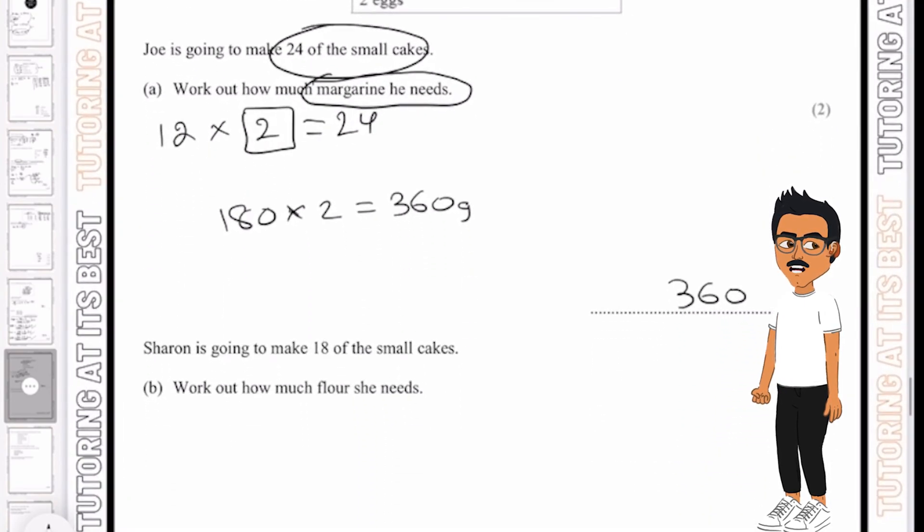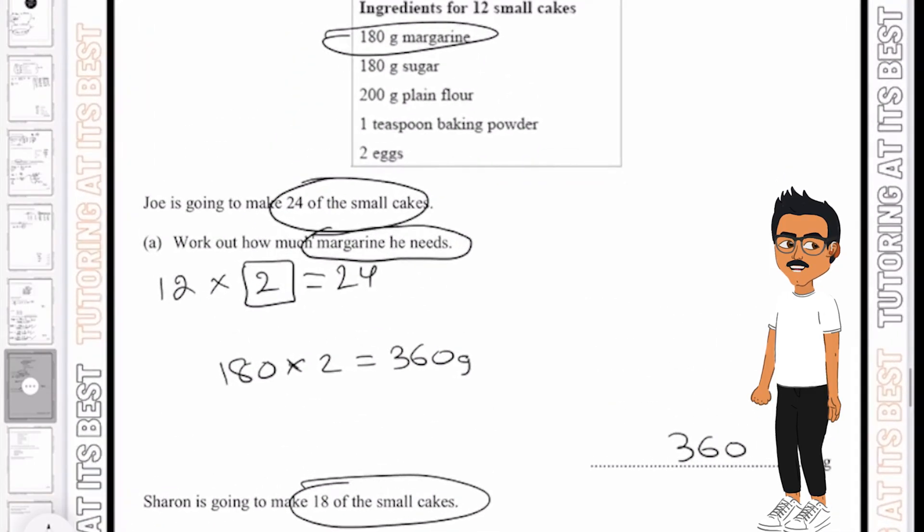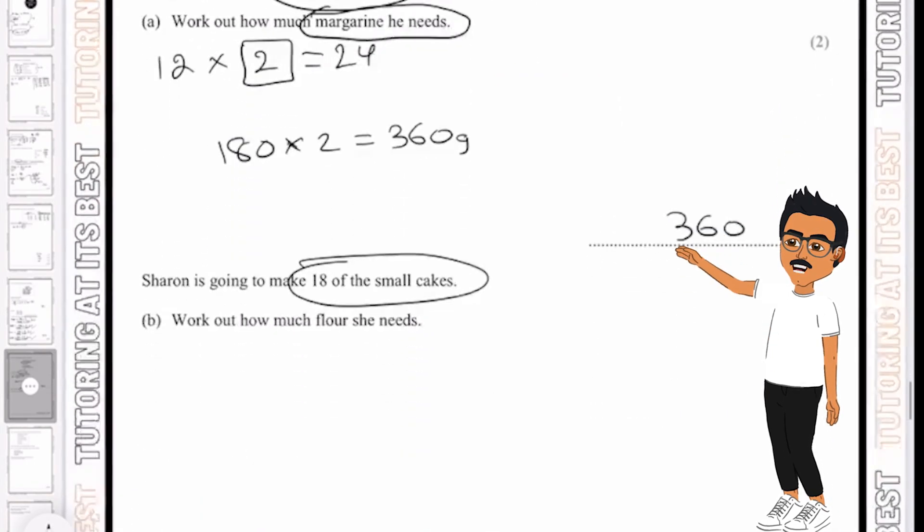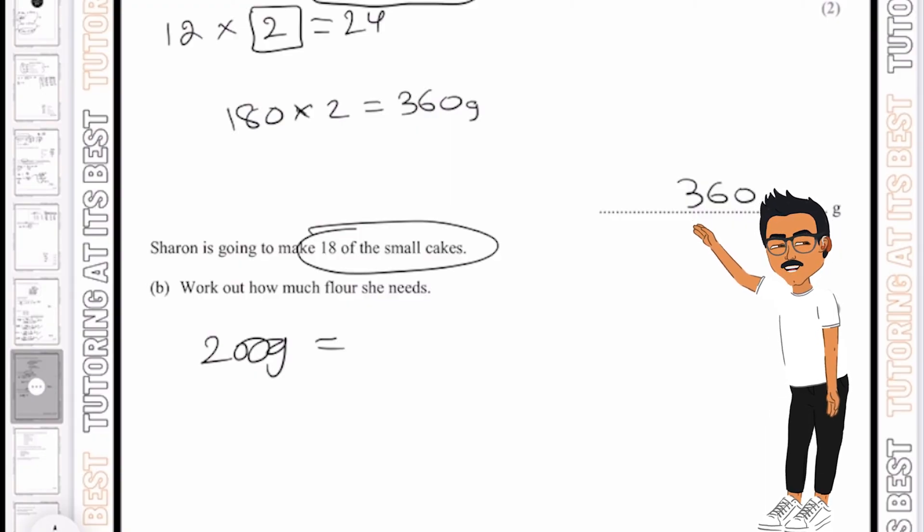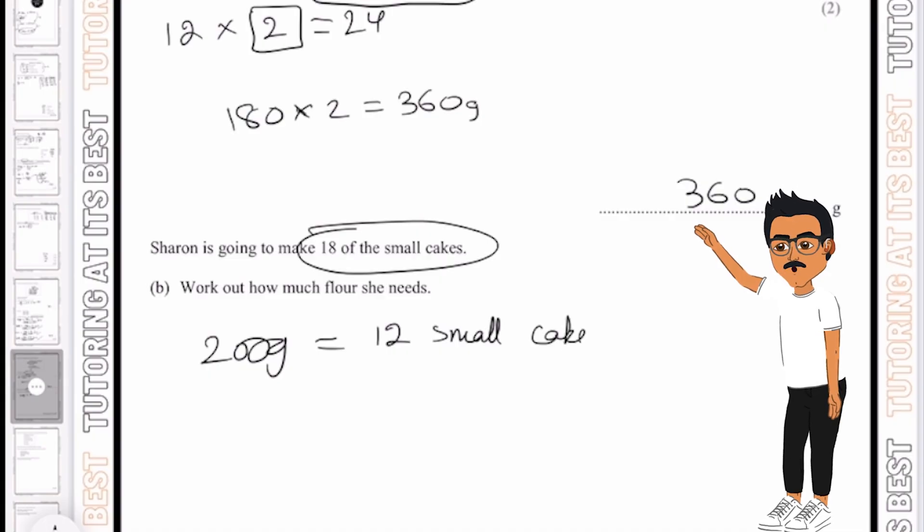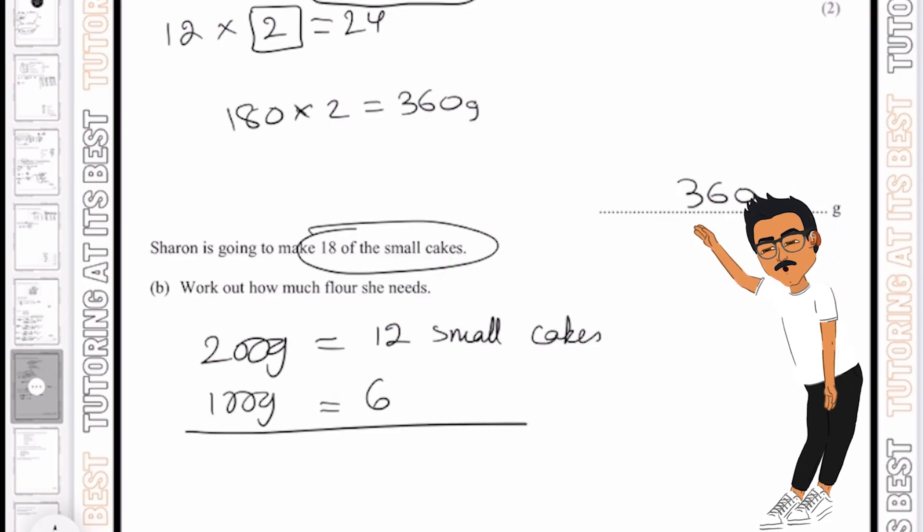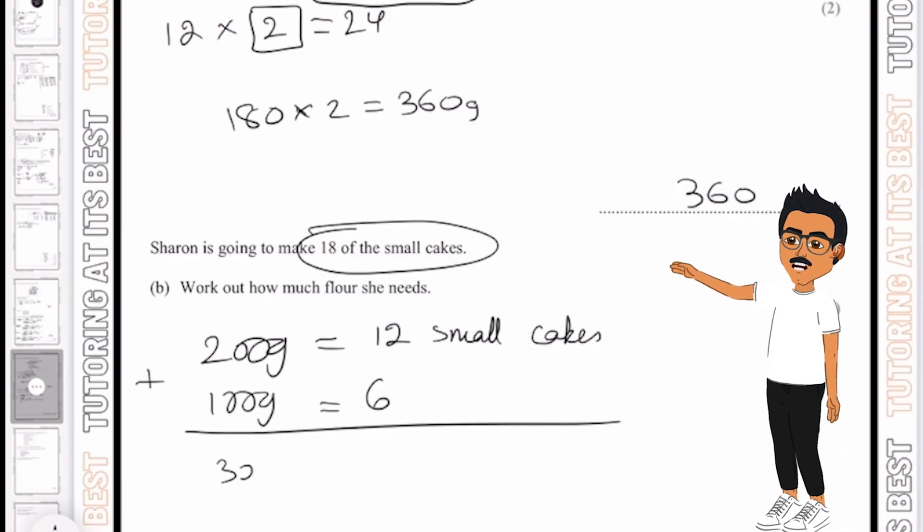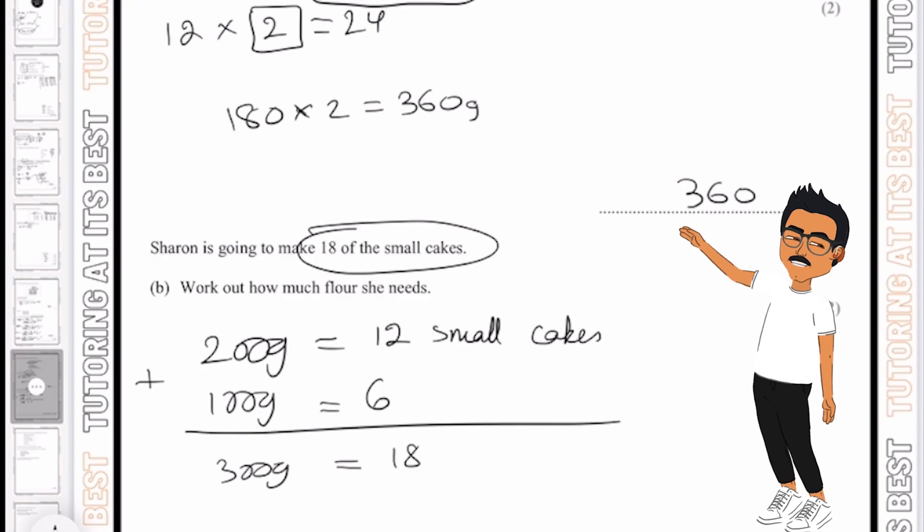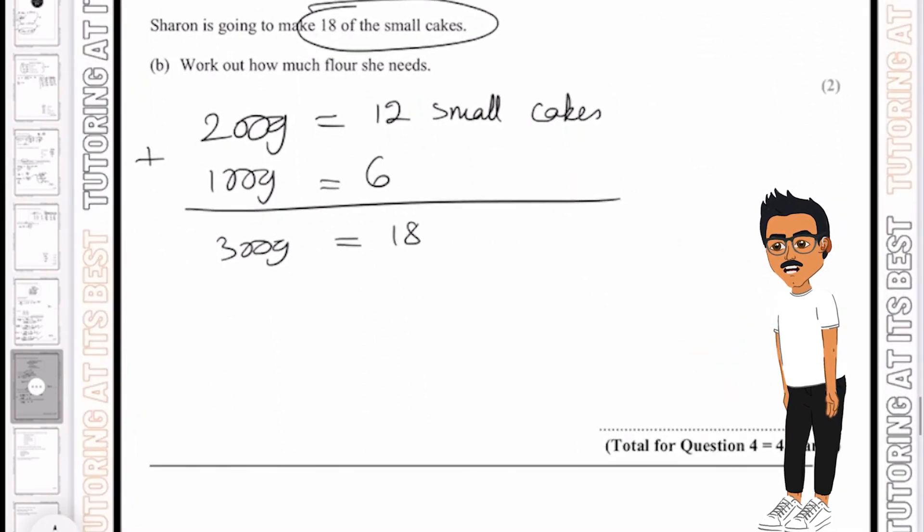But part B states that Sharon is going to make 18 of the small cakes. So we need to work out the amount of flour that she needs. So right now it shows us that we need 200 grams of flour. So if we know that 200 grams equals 12 small cakes, we need to make 18. So again, we can simply half this and get six small cakes, which is 100 grams, and then add them all on, which would give me 300 grams for 18 small cakes. And there we are.